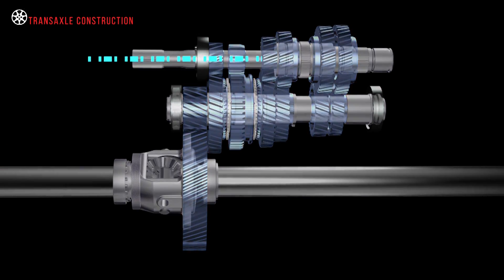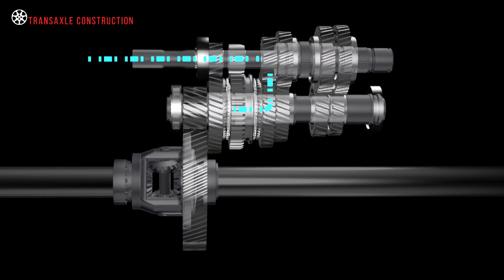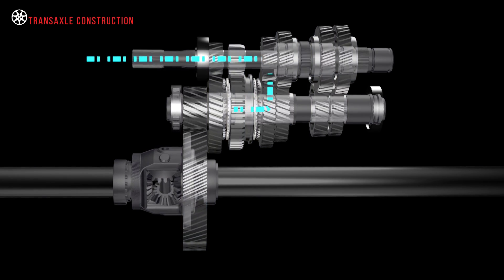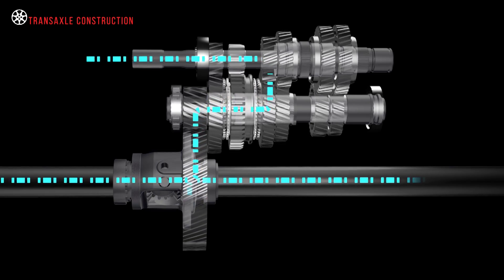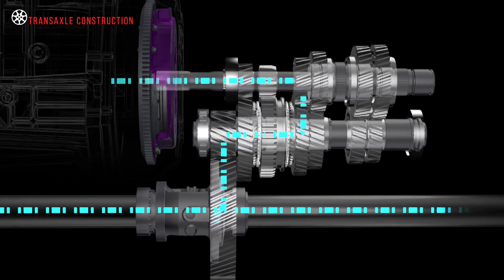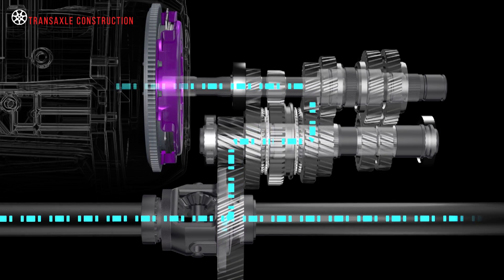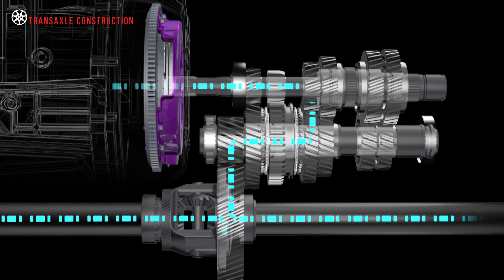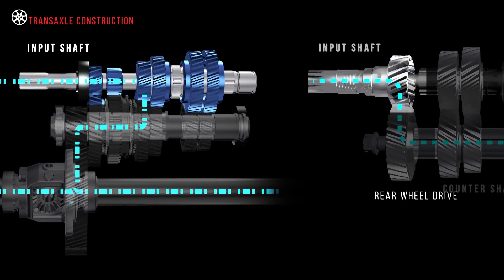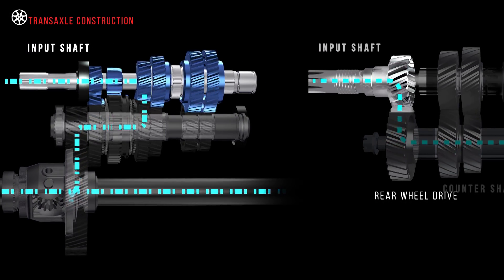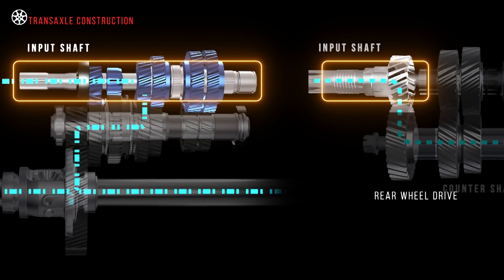Power flow begins in the primary or input shaft, through the secondary or output shaft via a gear set, and finally into the final drive and drive shafts. The input shaft in the transaxle transmission starts from the clutch and flywheel assembly, similar to a conventional transmission, but this input shaft is very different compared to a rear-wheel drive version.